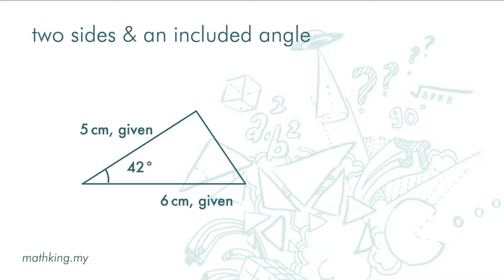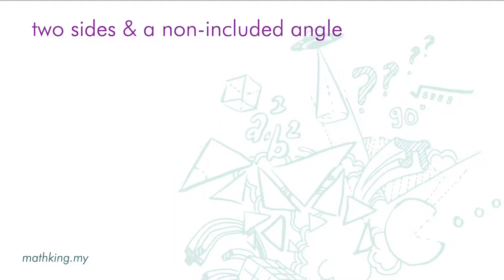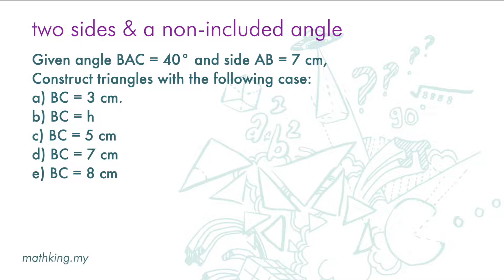Now, let's look at the case where we are given two sides with a non-included angle. Given angle BAC equal 40 degrees. And side AB equal 7 cm. Construct triangles with the following case. First, we draw a line segment. We mark the point A. And construct a 40 degrees angle.